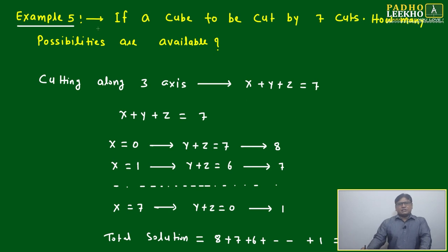Let's look at a few more examples and wrap up the session. Example 5: If a cube is to be cut by 7 cuts, how many possibilities are available? We are introducing possibilities, meaning permutation and combination.